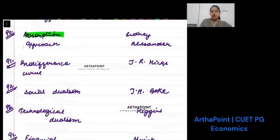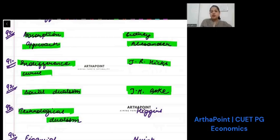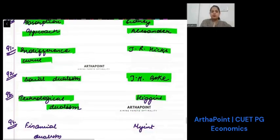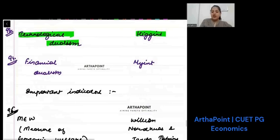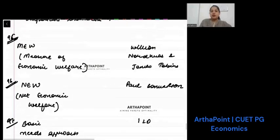Absorption approach is given by Alexander. Indifference curve is given by J.R. Hicks. This is Sidney Alexander. Social dualism is given by J.H. Boeke. Technological dualism is given by Higgins. Financial dualism is given by Myint.